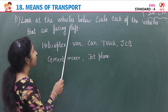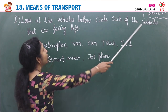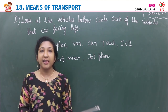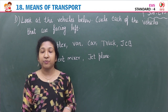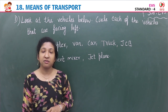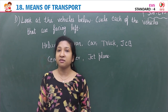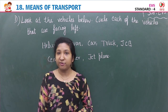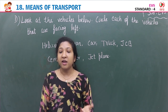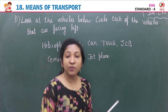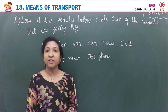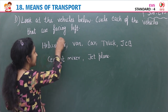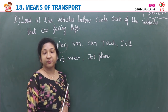Exercise D: Look at the following vehicles and circle each vehicle that is facing left. You have to identify which vehicles' front portion faces left. The first vehicle is a car — it is not facing left, so don't circle it. The second vehicle is a helicopter — it is facing left, so you can circle it.